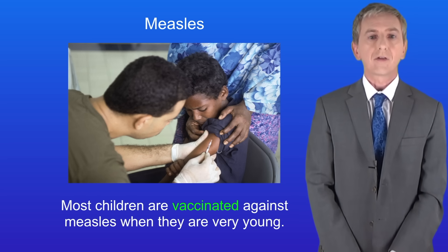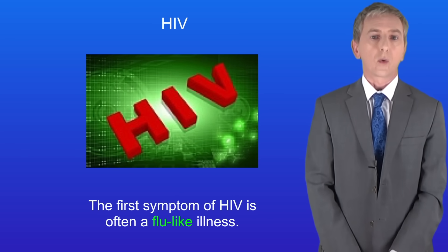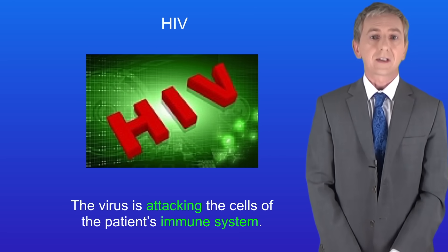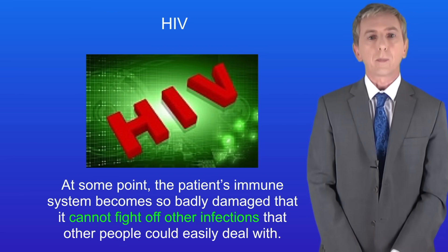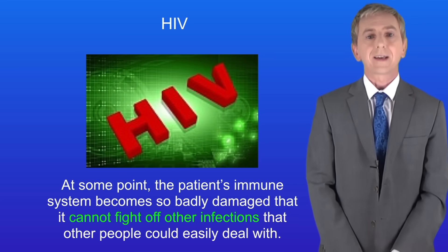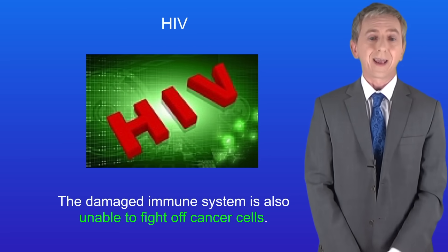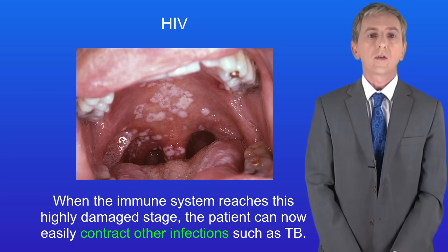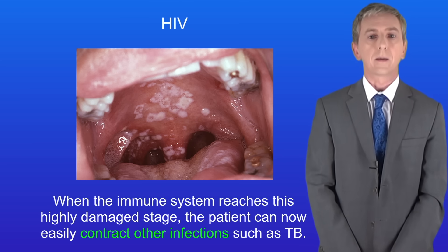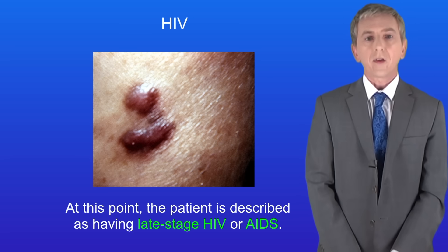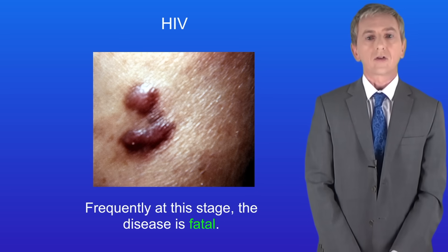Another example of a viral disease is HIV. The first symptom of HIV is often a flu-like illness but this usually disappears after one or two weeks. At this point the virus is attacking the cells of the patient's immune system. Over time the immune system becomes severely damaged — so badly damaged that it cannot fight off other infections that other people could easily deal with. The damaged immune system is also unable to fight off cancer cells. When the immune system reaches this highly damaged stage the patient can easily contract other infections such as TB, and may also develop cancer. At this point the patient is described as having late stage HIV or AIDS, and frequently at this stage the disease is fatal.